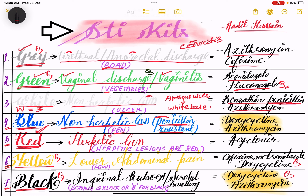The red kit is used for herpetic genital ulcer disease. Mnemonic: herpes presents with vesicular lesions which are red in color, so the red kit is used for herpetic genital ulcer disease. It contains acyclovir. The blue kit contains doxycycline and azithromycin.